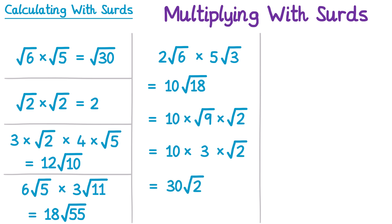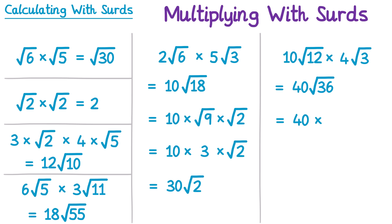You should always check when doing calculations with surds to see if they can simplify. Let's try 10 root 12 times 4 root 3: 10 times 4 is 40, and the square root of 12 times the square root of 3 is the square root of 36. This is interesting because the square root of 36 is just the integer 6. So this is just 40 multiplied by 6, which is 240.